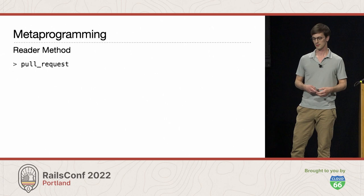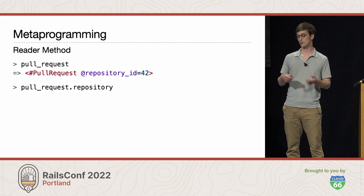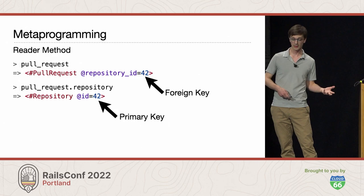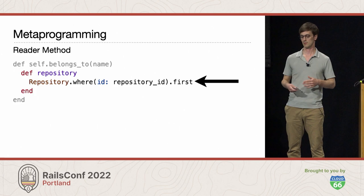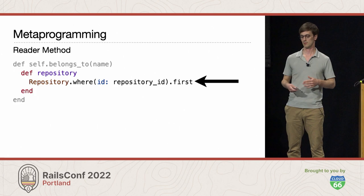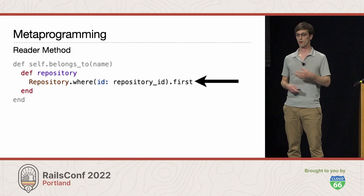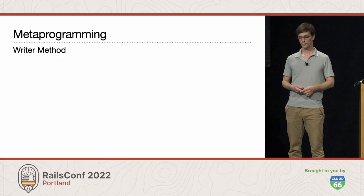Let's look at our reader method. Say we've got a pull request with a repository whose ID is 42. I want belongs_to to define a reader method, pull_request.repository, that returns the repository object whose ID is 42 — in other words, the repository whose primary key matches the pull request's foreign key. When doing this kind of metaprogramming, I find it easiest to start with a concrete method and then work toward a generic version. So this is what the reader would look like if I just wanted it to work for repositories: use ActiveRecord's where method to find the repository whose ID matches, then call first to return that one record.